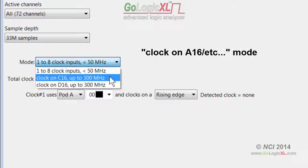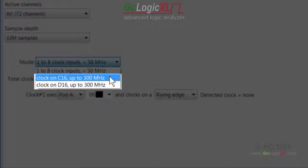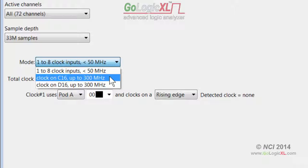The faster state analysis mode uses a phase lock loop to synchronize the GoLogic XL with one external clock signal using much higher frequencies. The external clock signal must be connected to one of the dedicated clock input channels for this mode. This can be A16 or B16 for 36 channel models and C16 or D16 for 72 channel models.